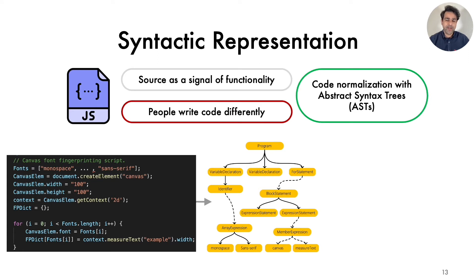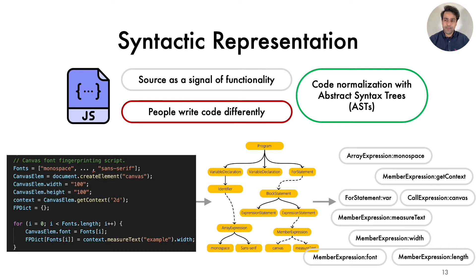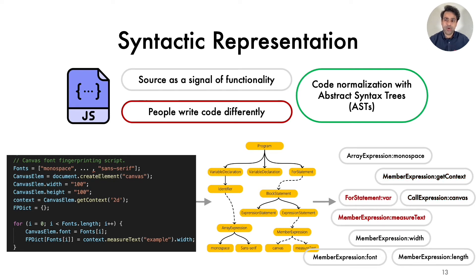The example here shows the conversion of a canvas font fingerprinting script to an AST. You can see that the AST has abstracted out developers' coding styles like comments, and has captured the syntactic dependencies of the APIs in the form of a tree. The tree representation allows us to extract the APIs in the context they were called, which we use in two ways: first, we treat a high concentration of APIs with fingerprinting potential as the script's intent to fingerprint; second, we treat usage of certain APIs in particular contexts as a signal of fingerprinting. For instance, calling the MeasureText method in a loop for several fonts is a signal of fingerprinting.